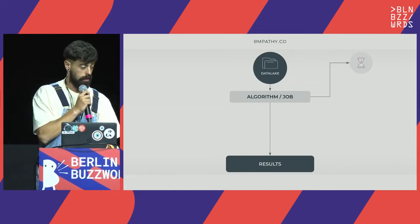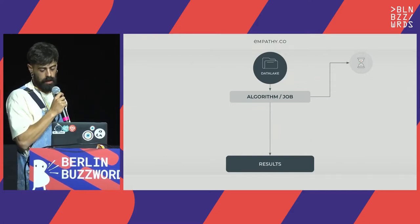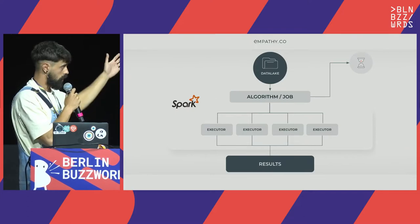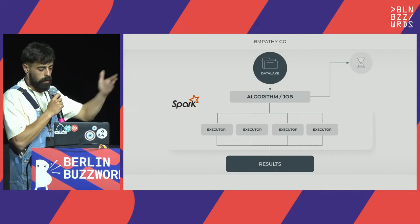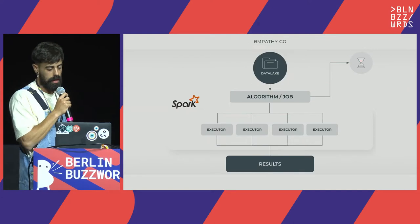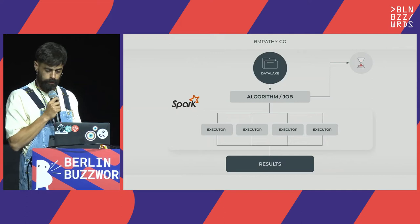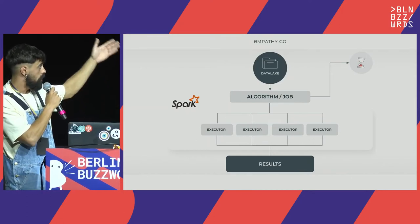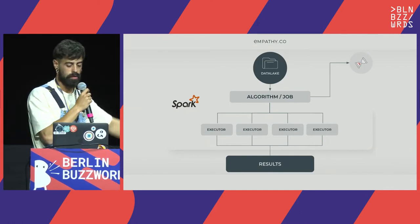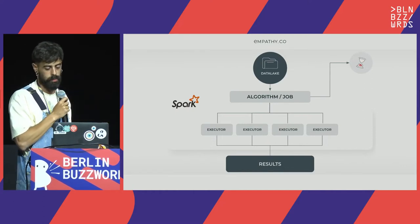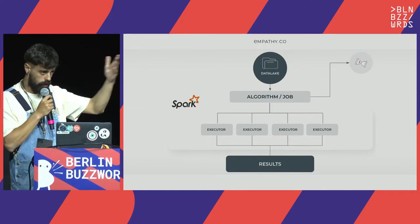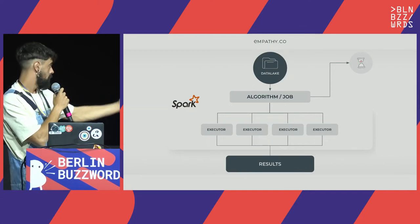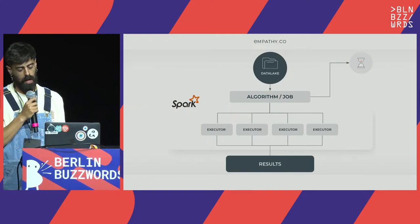Even a simple operation takes computation time, and Spark helps by splitting this computational work across different executor nodes and joining the results at the end. If our entry data is 10 gigabytes, each executor takes a portion, reducing computation time. In simple terms, we can work with large datasets with low computational times. We can also scale the solution — if we have more input data, we add more executors and execute in roughly the same time.